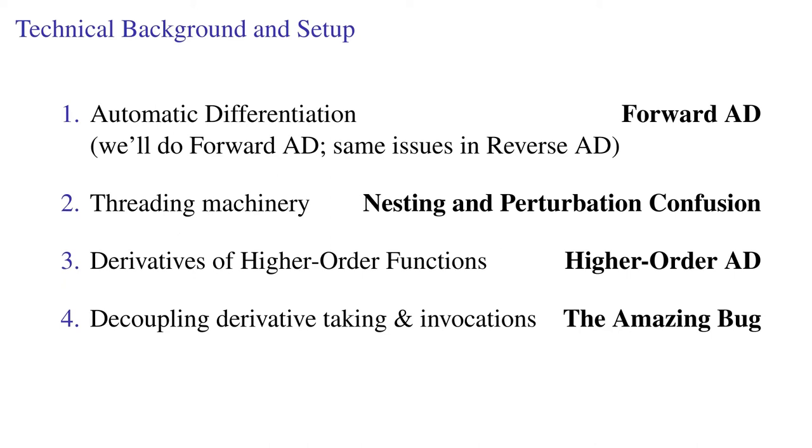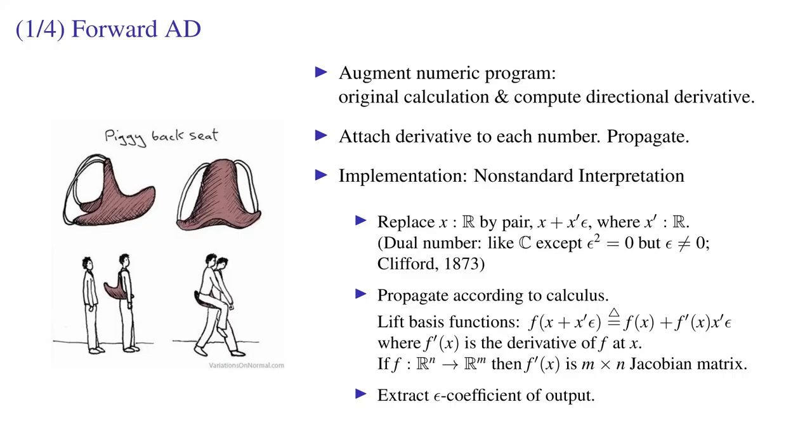Then I'll talk about classic perturbation confusion and how it's avoided using tags. We'll think about derivatives of higher-order functions and see how allowing them breaks the one-to-one correspondence between invoking derivative operators and taking derivatives, thus allowing this bug. After that's all unpacked, we'll look at ways to address the problem.